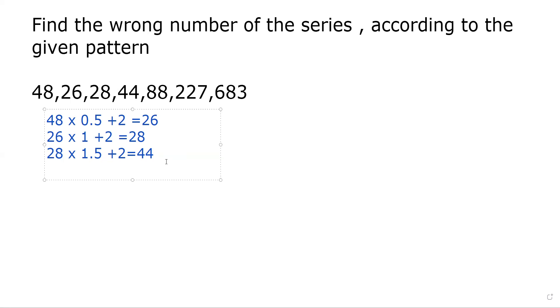Then if we find the relation between the fourth and fifth, that is 44 × 2 + 2 equals what? Is it 88? No, because 44 × 2 = 88, and plus 2 means it's 90. So we have found one wrong number—this one.